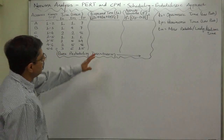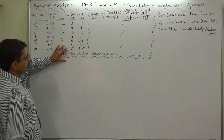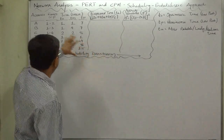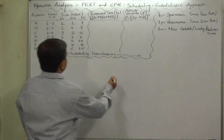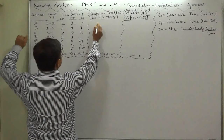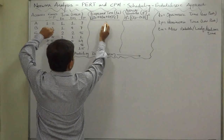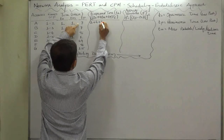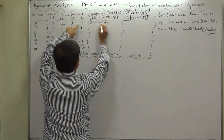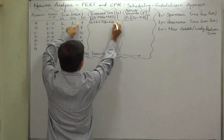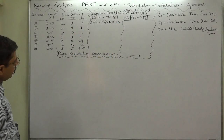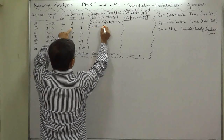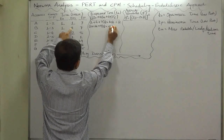Let's calculate first the expected time, and then on the basis of this distribution we can also calculate activity variance — the variance of time for each and every activity. For the first activity: TE = (TO=1 + 4×TM=4 + TP=7) / 6 = (1 + 16 + 7) / 6 = 24 / 6 = 4. For activity A: TE = (1 + 4×1 + 7) / 6 = 12 / 6 = 2.